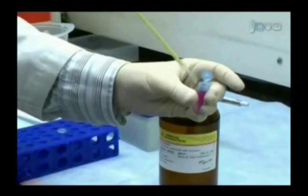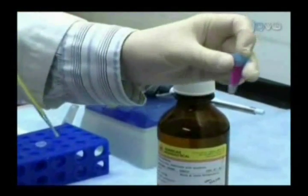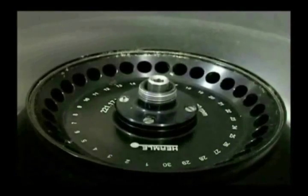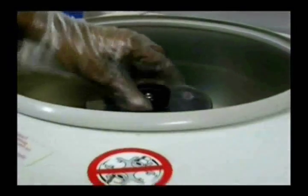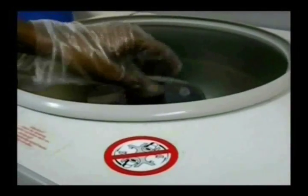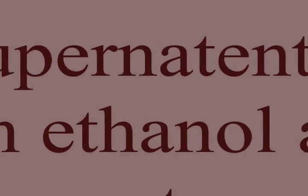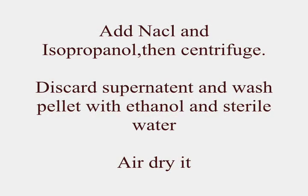Add chloroform and incubate it for about 2 minutes. Then it should be subjected to centrifugation for 20 minutes at 12,000 RPM. Transfer the aqueous layer to a new tube and add NaCl and isopropanol to it, then centrifuge it. Discard the supernatant and wash the pellet with ethanol and sterile water, and finally dry it.